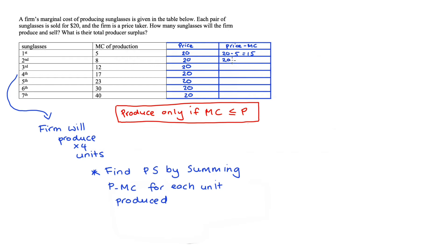For the second unit, we get 20 minus 8, which is 12. For the third unit, we get 20 minus 12, which is 8.